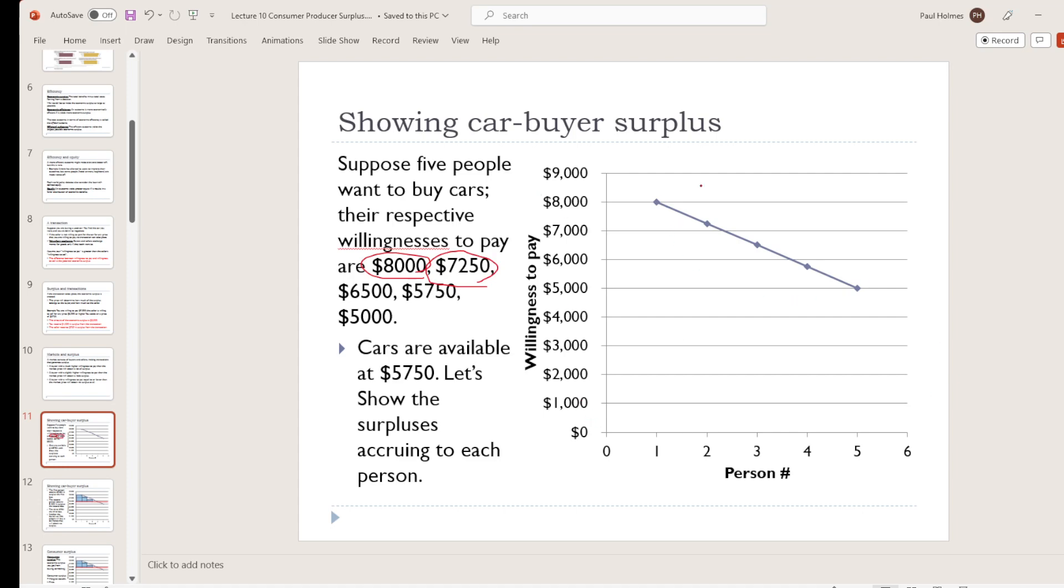So what I've done here next is I've lined those up on the graph. I've formed essentially a demand curve out of these data. So what are these points showing us? They're saying there's one person willing to pay $8,000. Two people are willing to pay at least $7,250. Three people are willing to pay at least $6,500, and so on. And then I went ahead and joined those points just because it makes it look prettier. It makes it look more like the demand curves that we're used to.